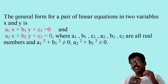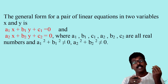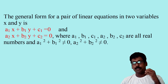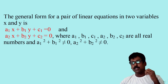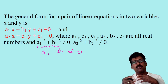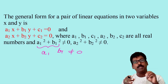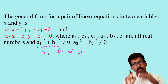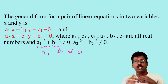Here a1, b1, c1, a2, b2, c2 are all real numbers, with a1 squared plus b1 squared not equal to 0 and a2 squared plus b2 squared not equal to 0. This condition means a1 and b1 can never both be equal to 0 simultaneously — a1 squared plus b1 squared equals 0 only when both a1 and b1 are 0, so this condition ensures the equation is valid.